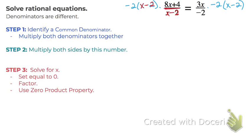Anything divided by itself is 1. So when you have something in the numerator and the denominator, you can cancel it out. So on the left side we're just left with negative 2 times (8x plus 4).